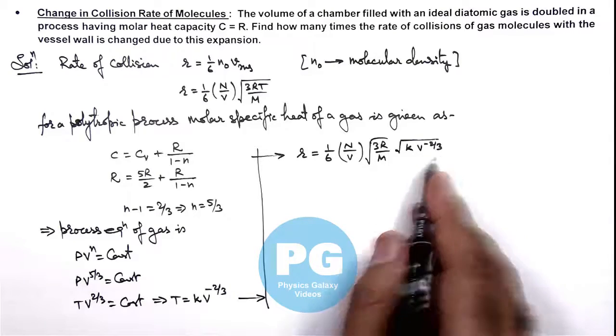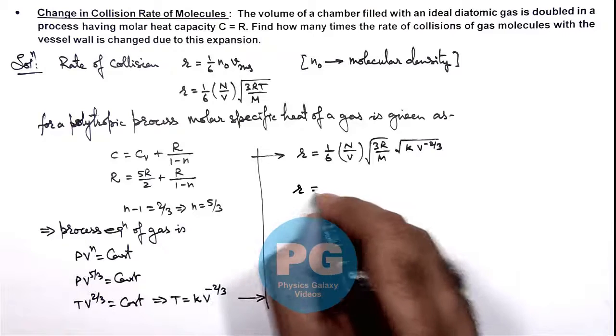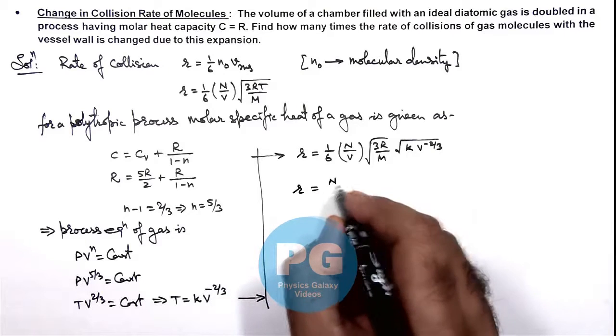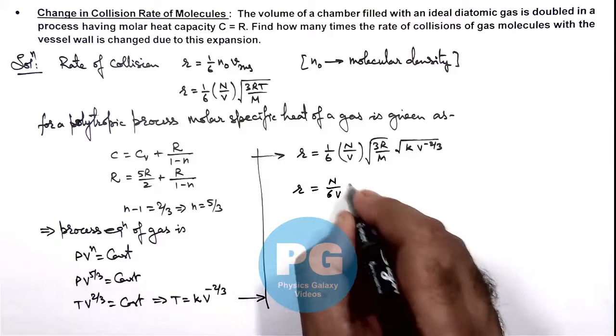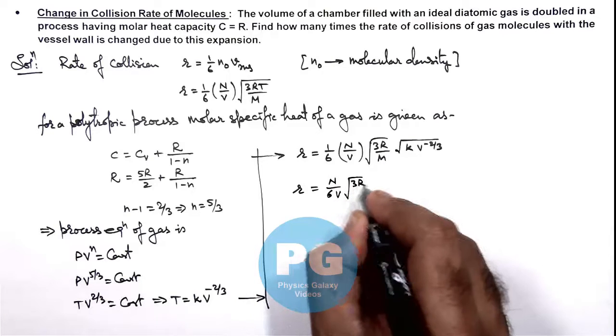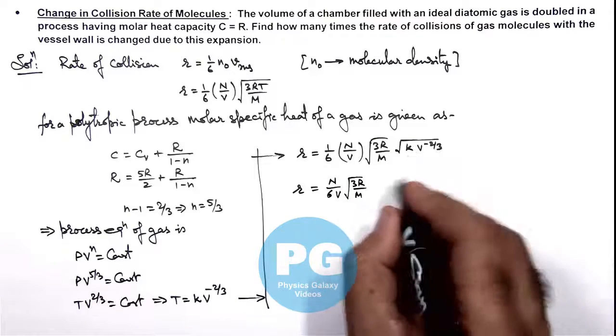Further on simplifying here you can see the rate we are getting is n by 6 v, multiplied by root of 3 r by m, and this can be written as